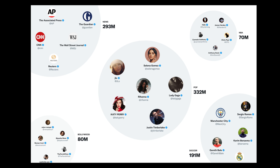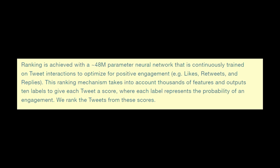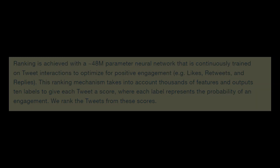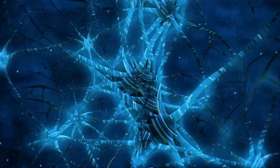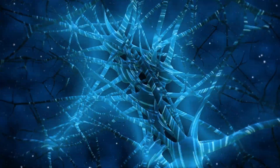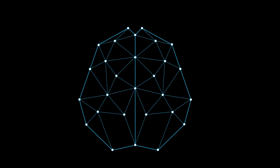Even after this, there are still a lot of candidates that need to be ranked in a particular order so your feed can be created. For this, Twitter uses a neural network — a 48 million parameter neural network. Your life and your popularity on Twitter is already determined by AI. People might still be talking about how AI will replace us, but your life is already controlled by algorithms embedded in these neural networks.